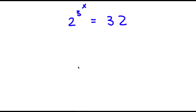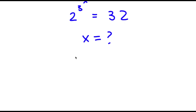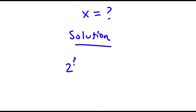Alright, so I have 2 to the power of 3 to the power of x is equal to 32. So now, the first thing I'm going to do to solve this problem is make both of these bases the same. So I obviously want to find the value of x here. For my solution, I start with 2 to the power of 3 to the power of x is equal to 32.